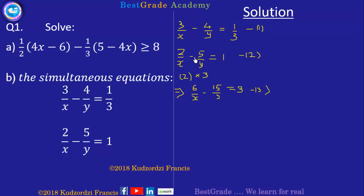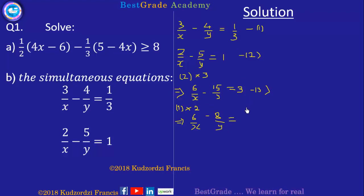Now we multiply equation 1 by 2 so that the coefficients of 1 over x become the same. This gives us: 2 times 3 over x equals 6 over x, then 2 times 4 gives minus 8 over y, and 2 times 1 over 3 gives 2 over 3. Call this equation 4.